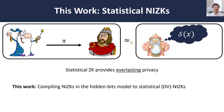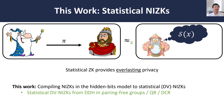So in this work, we provide a new way of compiling non-interactive zero knowledge in something called the hidden bits model — which I will introduce shortly — to realize new constructions of statistical designated verifier NIZKs. In particular, we give the first constructions of statistical designated verifier NIZKs from the DDH assumption in a pairing-free group, as well as from the quadratic residuosity assumption. We also recover an instantiation from the decisional composite residuosity assumption.